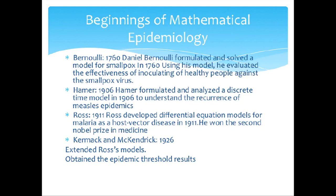Kermack and McKendrick, 1926, extended Ross' model and obtained the epidemic threshold results.